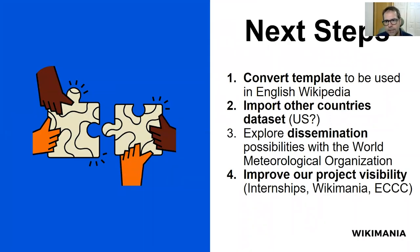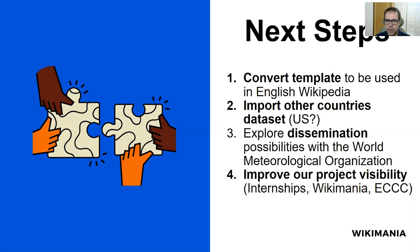Next steps for us. The first step is to translate the template to display the record values shown earlier in other Wikipedias, starting with Wikipedia in English. We hope to increase interest in the use of the data. We would also like to add data from other countries — for licensing reasons, it would be easy for us to upload US weather observations to start with. We were recently contacted by the World Meteorological Organization, a United Nations agency. They are developing new standards for disseminating observations to every country and are interested in exploring the possibility of aligning this project with their mandate. This summer, two data journalism interns are publishing articles addressing climate change issues in Canada, guided by the data we've put in Commons and Wikidata.